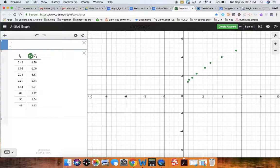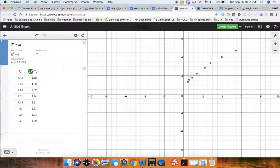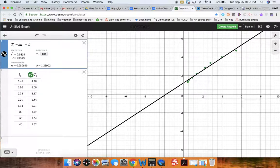So I'll click on Expression. And the vertical axis is the period, which is capital T. So I'll go T1 and then the tilde to prompt regression. And then M times L1 plus B. And the R-squared value is 0.9819, which is not super convincing.